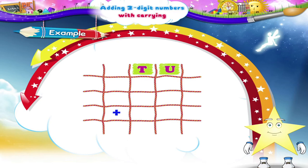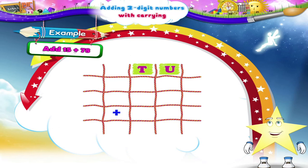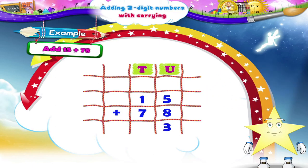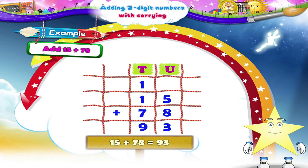Starry, while adding two two-digit numbers, we can also keep the carried over tens digit in mind and then add. Let's see how. Add fifteen plus seventy-eight. First, we arrange the numbers in proper columns. How much is five units plus eight units? Yes, it is thirteen units. We write three in the units place of the answer and keep in mind the carried over one ten. Now let's add the tens place digits: one ten plus seven tens plus one ten equals nine tens. So fifteen plus seventy-eight equals ninety-three.